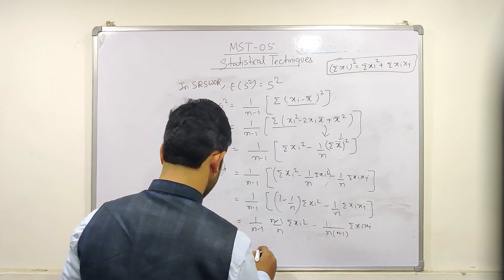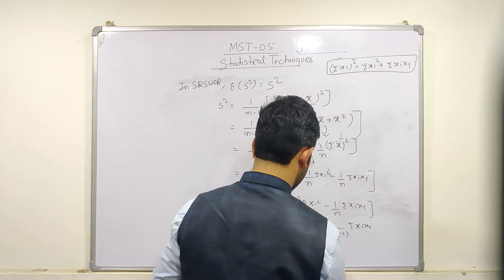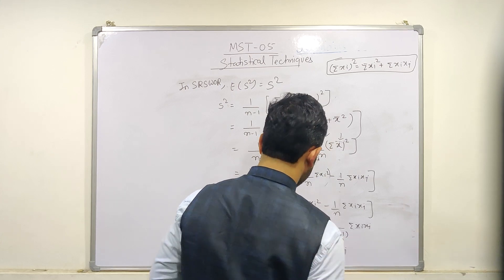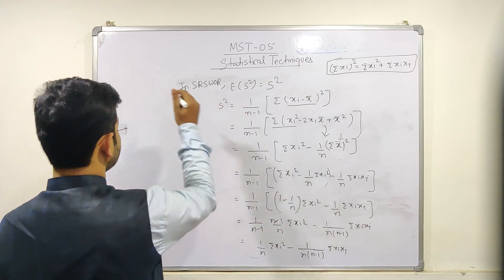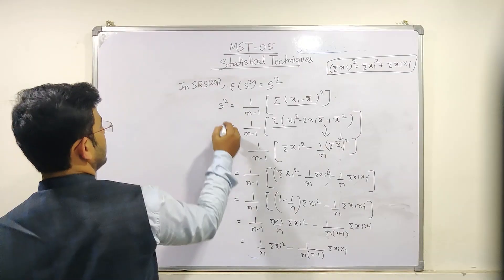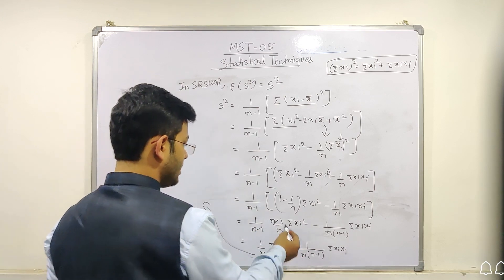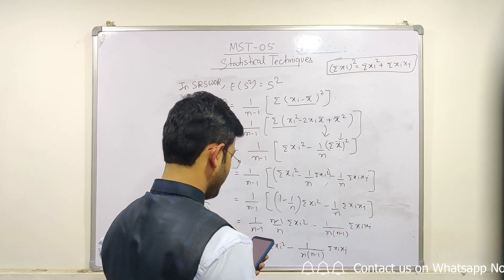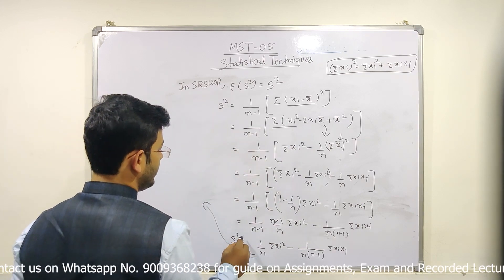After calculating, we get: (1/n)·Σxi² − (1/(n(n−1)))·Σxi·xj. This is the simplified value of s² before taking expectation. Now we are not done — this is just the expression for s².